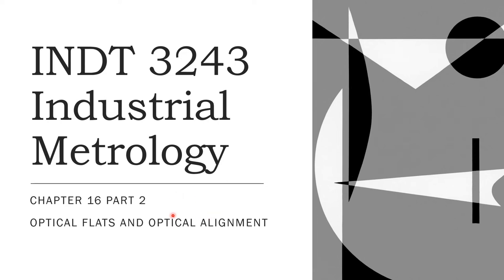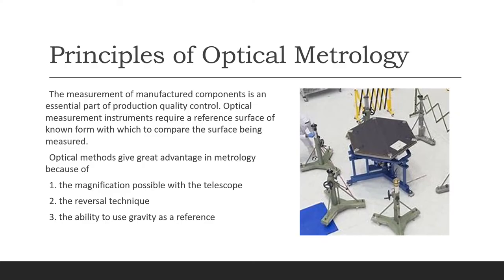We are going to continue Part 2 of Chapter 16. The first thing we have to know is the principles of optical metrology — where we use optics and light to measure. Measurement and manufacturing components are an essential part of production quality control, and this is the type of measurement used in quality.